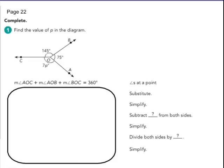Find the value of p in this diagram. So we have three angles at O here, and they want to know what is 1p, not 7p. So these are the angles at that point O. Substitute in their values. AOC is 7p, and AOB is 75, and BOC, the measure of angle BOC is 145. So adding those together, it has to equal 360.